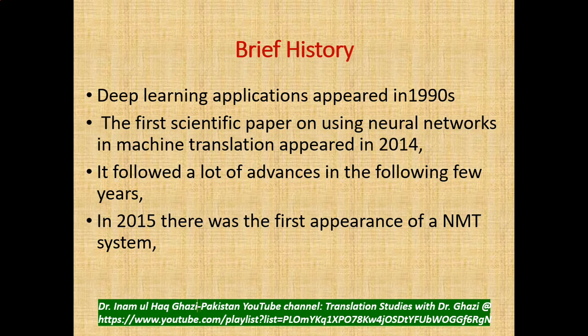For a very brief history: deep learning applications and neural networks appeared in the 1990s. The first scientific paper on using neural networks in machine translation appeared in 2014, followed by many advances in the following few years. In 2015, there was the first appearance of neural machine translation systems — so just about five years of history for neural machine translation.